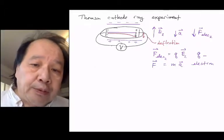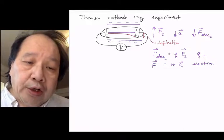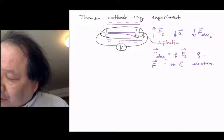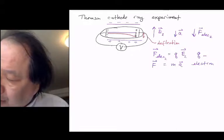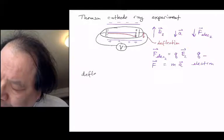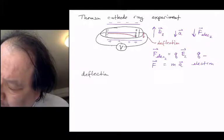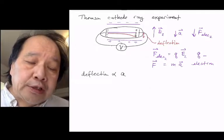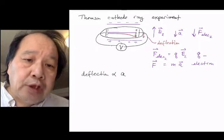Thomson wasn't happy with just knowing that he discovered a new particle, he wanted to find out some of its characteristics, and this is how he did it. He knew that deflection is proportional to acceleration. If you double the acceleration, you double the deflection.